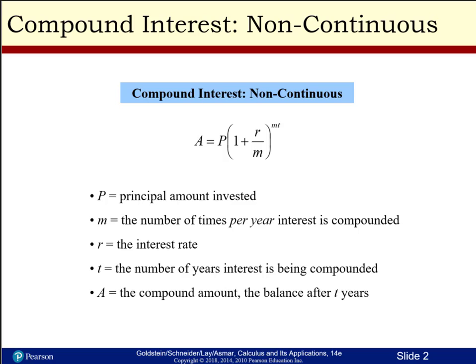With this formula, capital P is the principal amount invested; m is the number of times per year the interest is compounded — sometimes that's n in other equations, and in fact most other textbooks use n instead of m. R is the interest rate as a decimal, t is the number of years interest is being compounded, and A is the amount — the balance after t years.